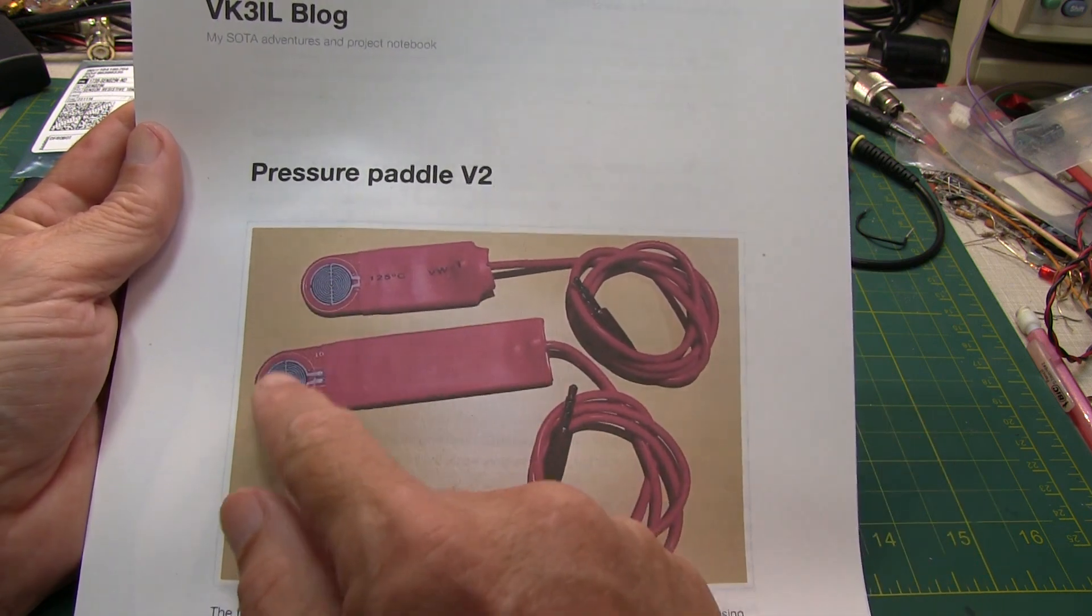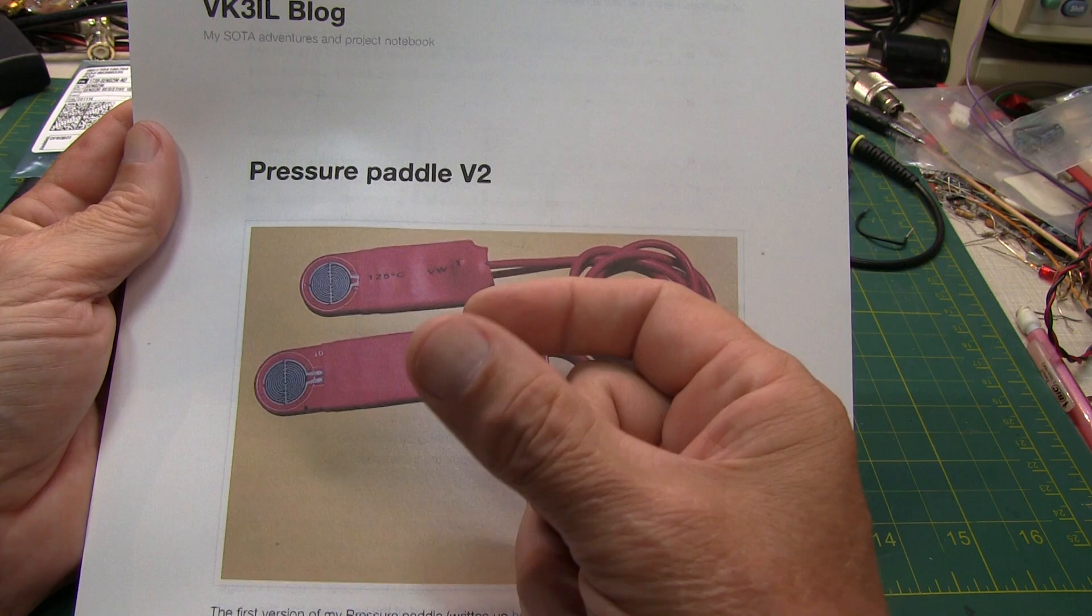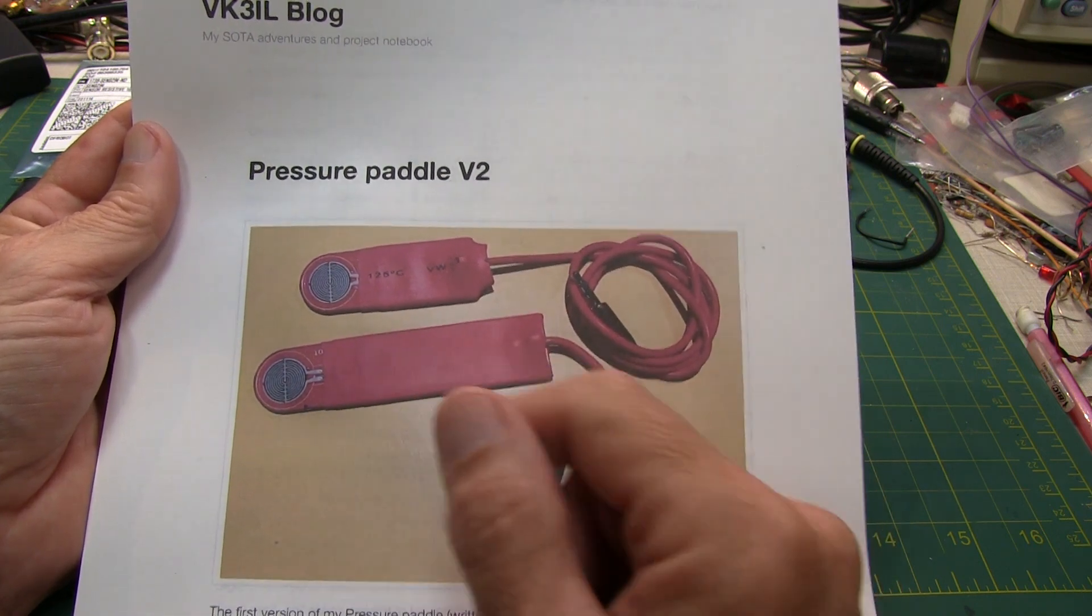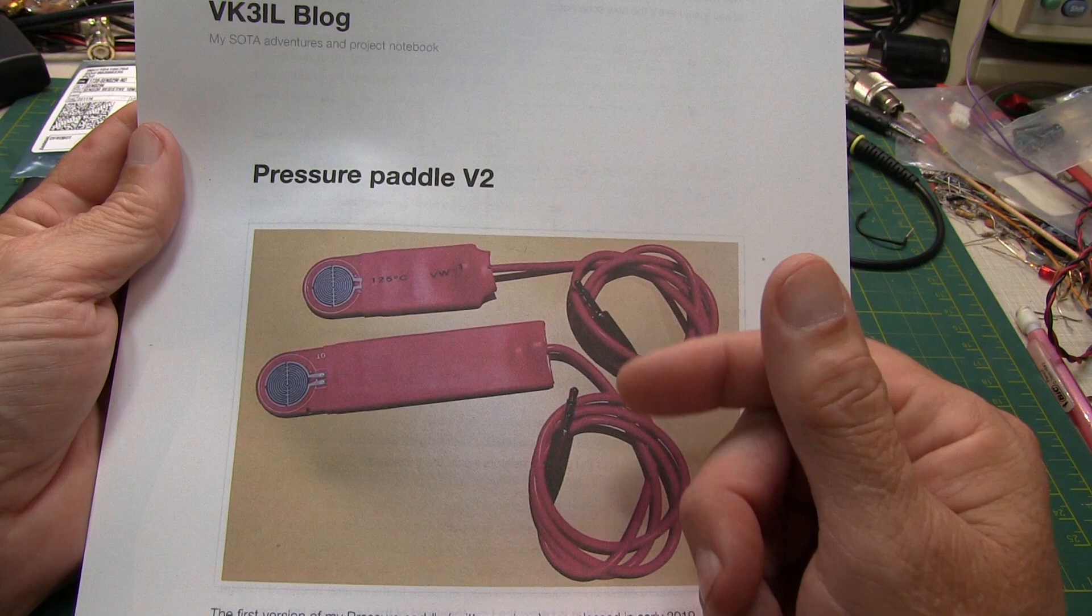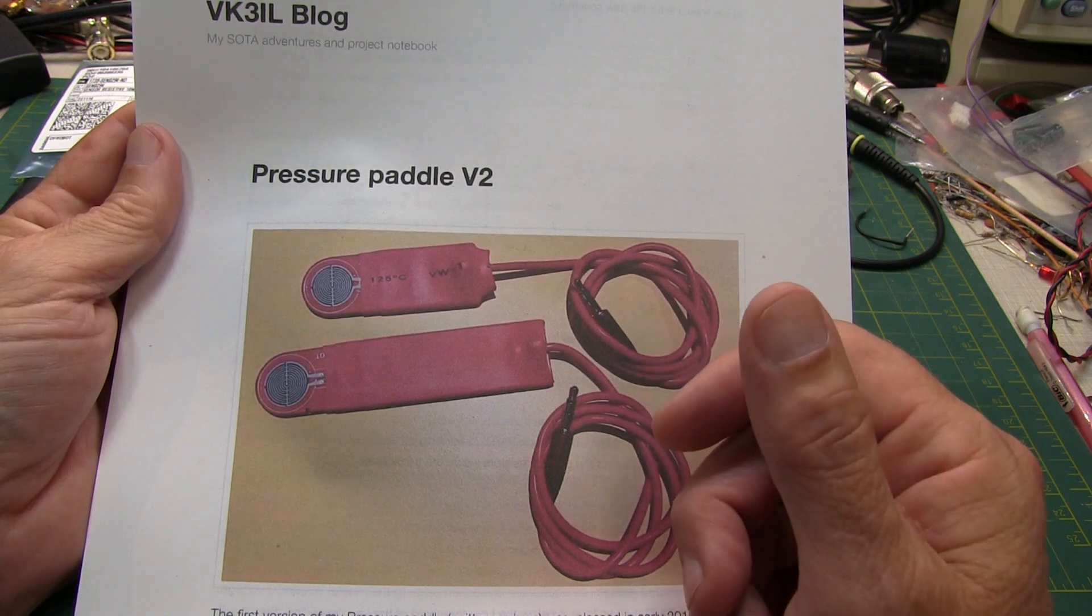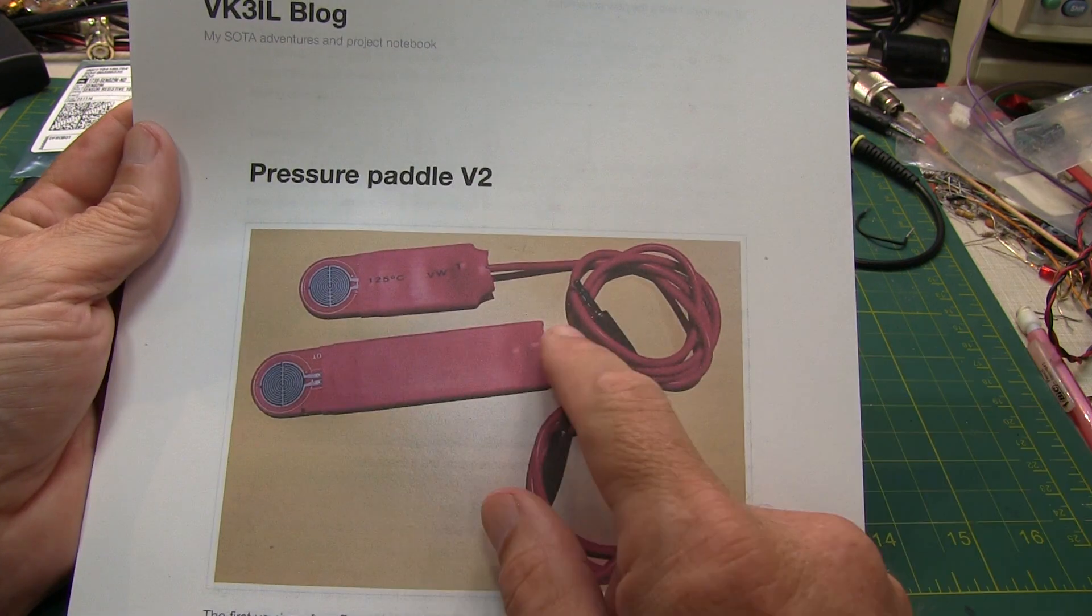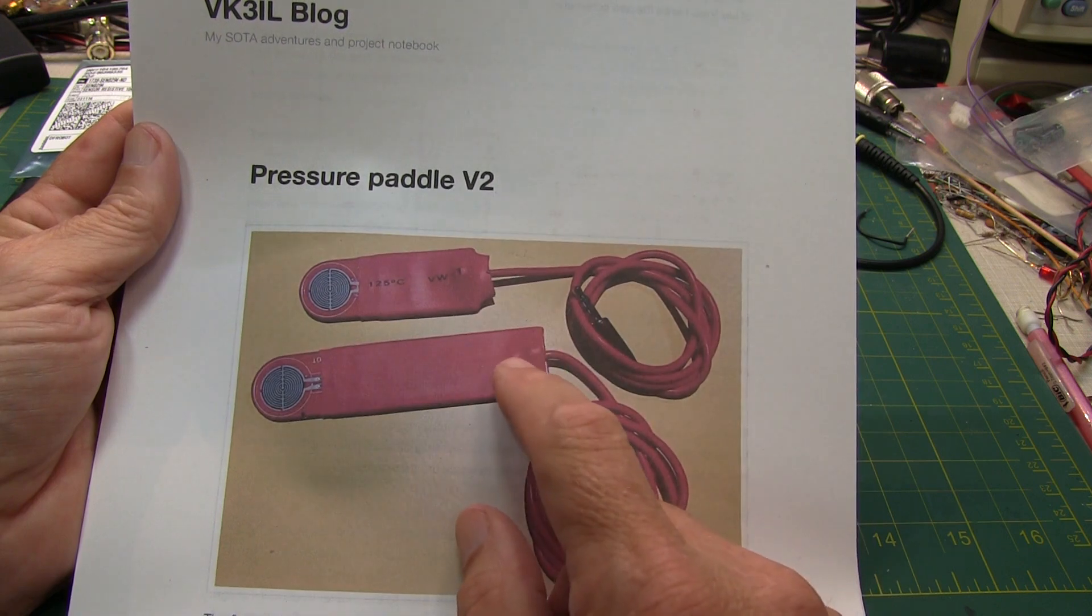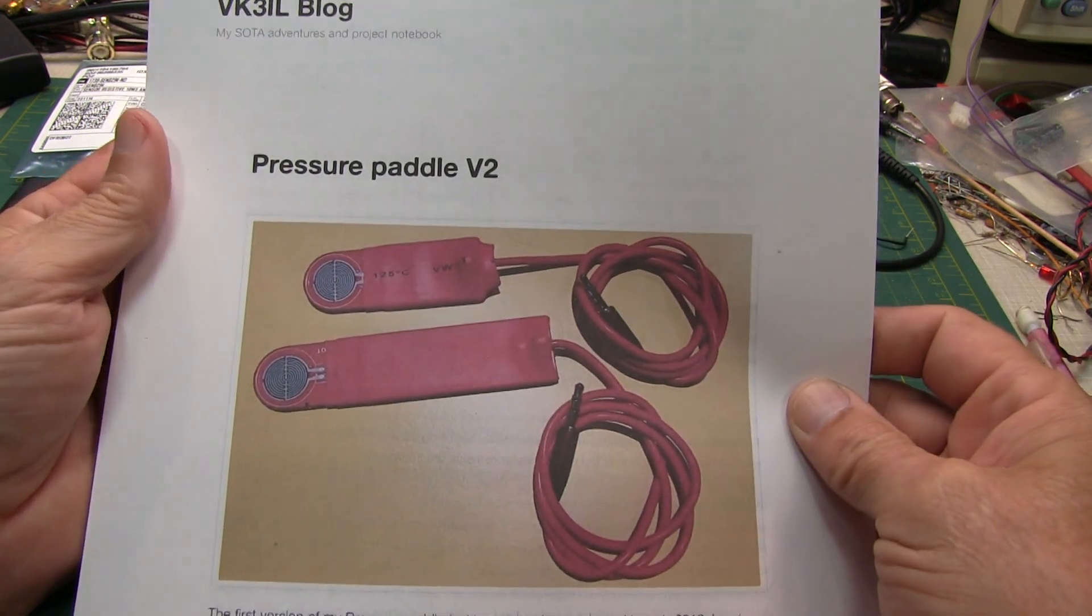It's just sensors on either side of the paddle that detect when your fingers touch them, and that's used with a small electronic circuit to enable the dits and the dahs with the electronic keyer. The one really nice thing about this is it's really small, very compact, and really no moving parts.